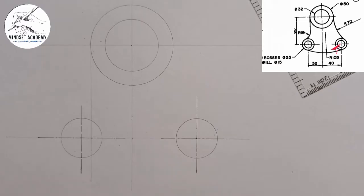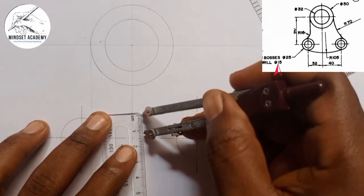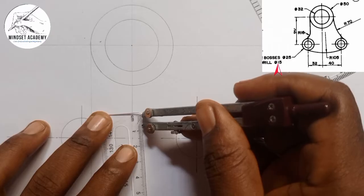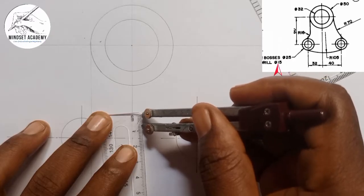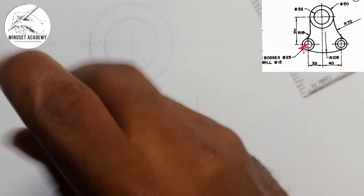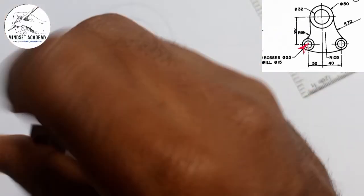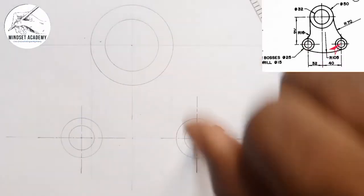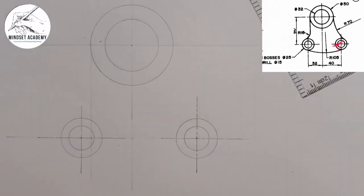Now the drill inside has a 15 millimeter diameter. Half of it will be 7.5. I am going to measure 7.5 on my rule — this is 7.5 here. I will place it at the center and draw this circle, then come to the other center and do the same thing.